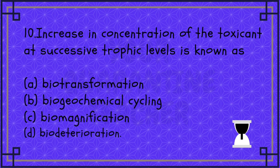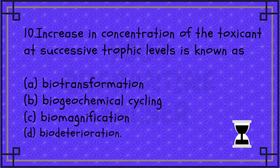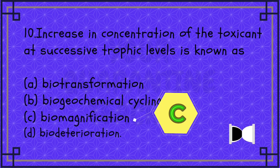Next, tenth question: Increase in concentration of the toxicant at successive trophic levels is known as? DDT is non-degradable at each trophic level. The process that increases at successive trophic levels — the name is Biomagnification, Bioamplification, or Bioconcentration. The answer is Option C, Biomagnification.